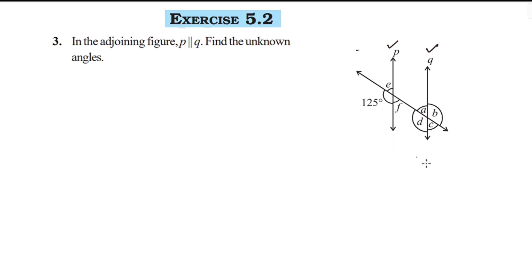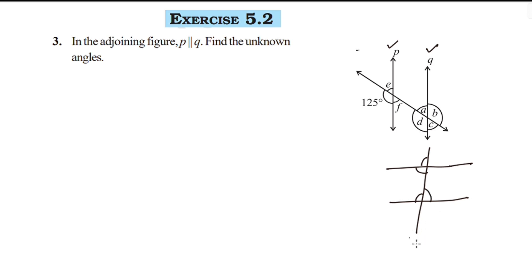In the introduction video, we have two lines parallel with a transversal. There are a few angles formed. The properties we have are: corresponding angles, alternate angles, and angles on the same side of the transversal, which are supplementary — that is, they add up to 180 degrees.